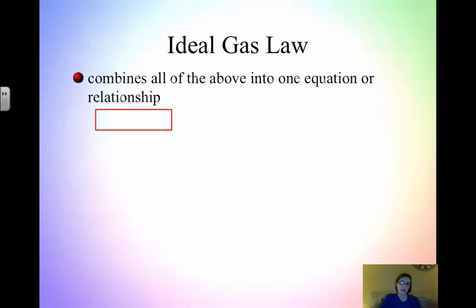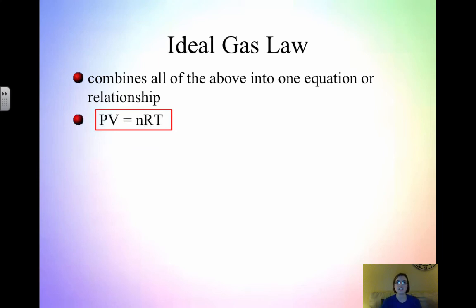The Ideal Gas Law combines all of the gas laws we looked at in the previous video into one equation. The Ideal Gas Law is PV = NRT — sometimes called 'Pivner.' This is probably going to be the gas law you will use the most, and it will also tie into stoichiometry.